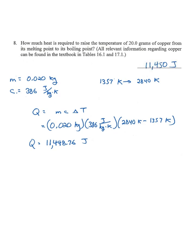Number eight: How much heat is required to raise the temperature of 20 grams of copper from its melting point to its boiling point? All relevant information regarding copper is given in those tables in the book. Notice we're not melting anything, we're not boiling anything. We have one temperature, the melting point, and we're taking it up to the higher temperature, the boiling point. So this is a situation for Q = mcΔT.